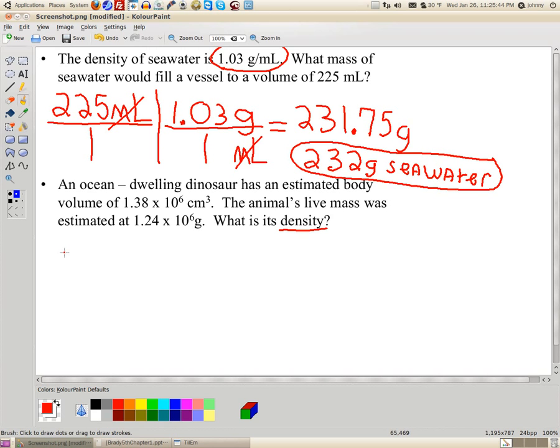Now, remember, it's mass over volume. So, the 1.24 would be written down in the numerator. 1.24 times 10 to the 6th grams. And, believe it or not, that is a g. Okay.